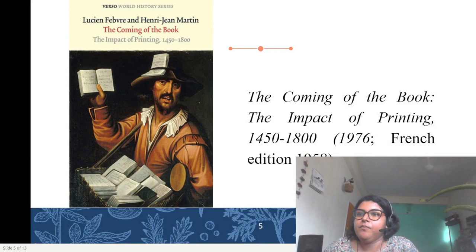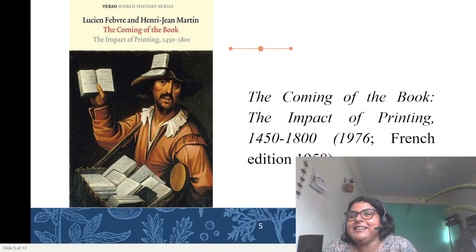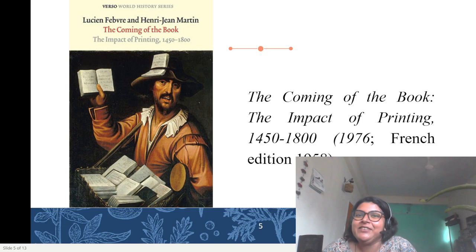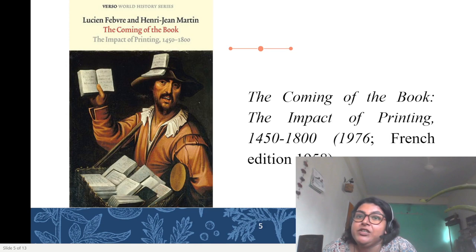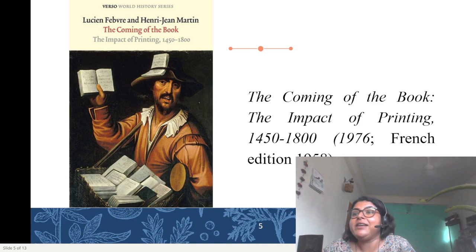Lucien Febvre and Henri-Jean Martin's 'L'Apparition du Livre' is a 1958 volume, translated into English as the 1976 book 'The Coming of the Book: The Impact of Printing, 1450–1800.' It studied the spread of print in Western Europe after Gutenberg and its impact on ushering in modernity. The Annales School had moved away from traditional history of elites and major events, using sociological and anthropological techniques to examine the emergence of printed books in Western Europe, arguing that the shift from oral and handwritten communication to printed texts had radical implications for the ways in which Europeans thought about the world.